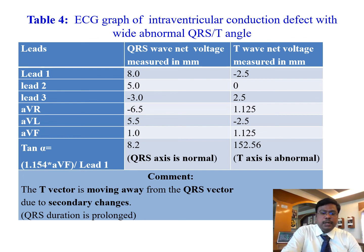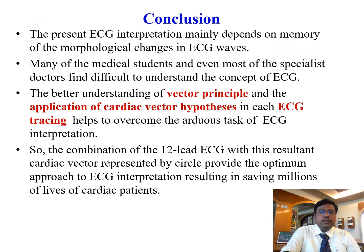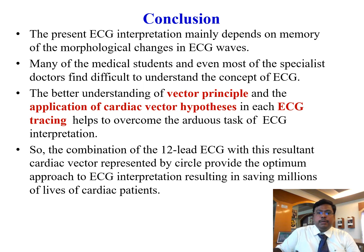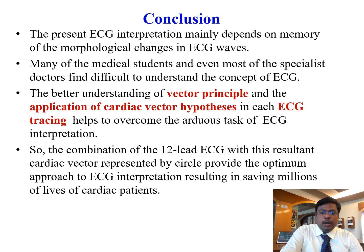The QRS vector is not deviated because the inferior wall is not infarcted. In the fourth example of intraventricular conduction defect, the QRS and T circles are constructed. The T circle moves away from the QRS due to secondary changes, and QRS duration is prolonged. Conclusion: the present ECG interpretation mainly depends on memorization of morphology changes in ECG waves. The better understanding of vector principles and application of cardiac hypothesis in each ECG tracing helps overcome the arduous task of ECG interpretation. The combination of dual lead ECG with the cardiac vector represented by circles provides the optimal approach to ECG interpretation, resulting in saving millions of lives of cardiac patients.